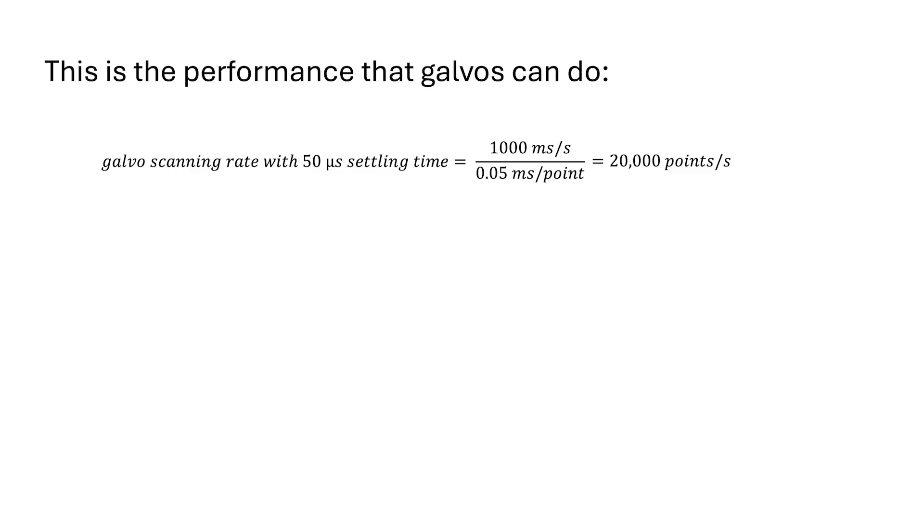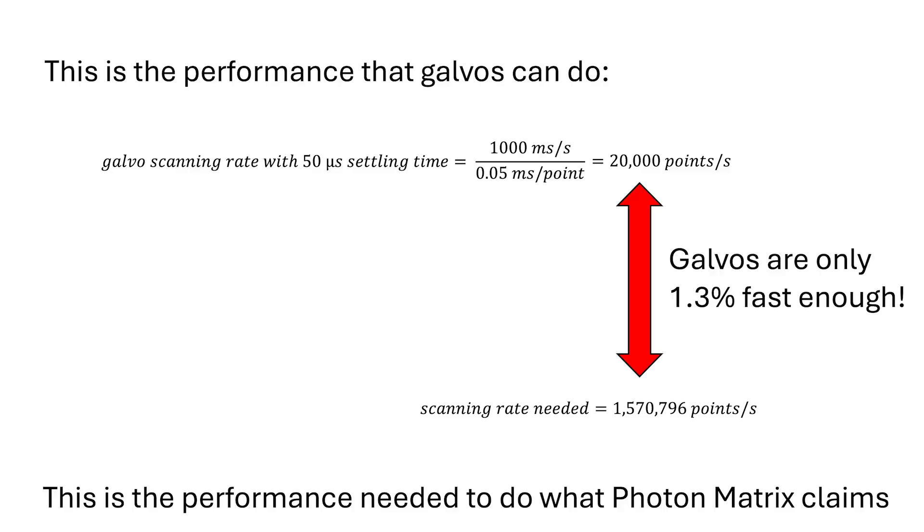But in order to get the performance that Photon Matrix is claiming it can do, you need something that can scan over 1.5 million points per second. So with using a galvanometer, we only have about 1.3% of the speed that is needed. And even if you give the device all 4 milliseconds to find the mosquito rather than just 2 milliseconds, you're still only able to scan the points at 2.6% of the speed that you need. This is what I see as being the fundamental flaw of what they are trying to do with Photon Matrix. And I'm not aware of any way to get around this problem.